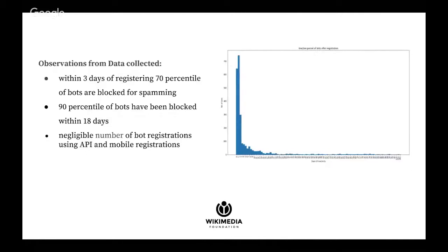We started collecting data from February, and while observing the data there were some quite interesting observations. We found that most bots were active within three days of registering — 70% of bots started spamming within three days and were blocked within three days. This is important because we can see the results of our experiments quickly. Another interesting observation is that 90% of bots were blocked within 18 days of registration. We also had information about accounts registered using APIs and mobile registrations, but the number of such bot registrations were very negligible compared to accounts created using the web interface.